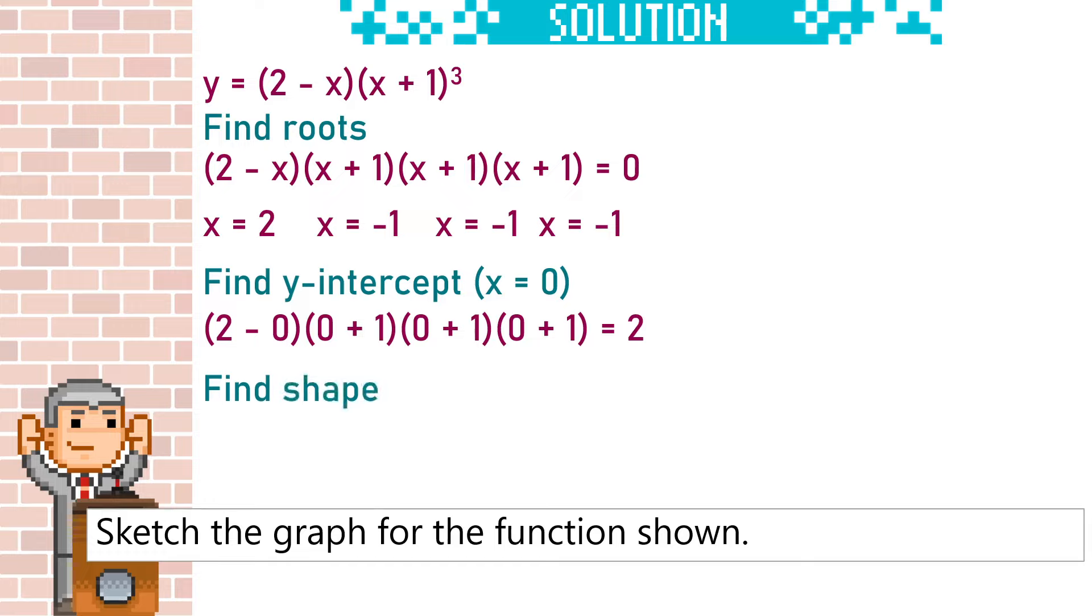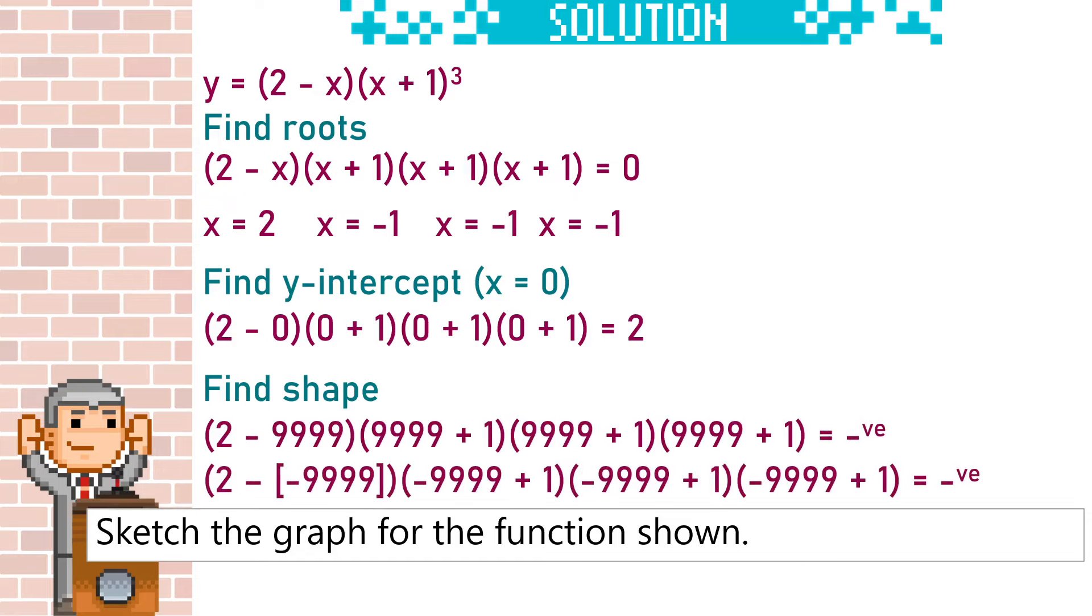And finally, to find the shape, we substitute in a really big positive number and a really big negative number. Both of these will give us a negative answer, so we know it's going to be a negative quartic. It's going to start low and end low.